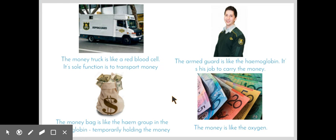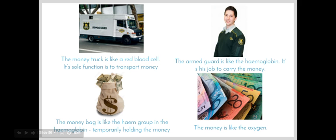We're going to use an analogy to explain what hemoglobin is. We've all seen money trucks driving around from place to place, and then out jumps an armor guard that carries the money bags into the bank and drops off the money. In relation to hemoglobin, our money truck is like a red blood cell.